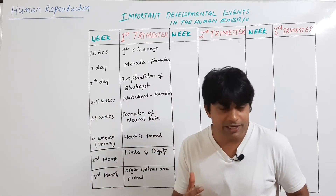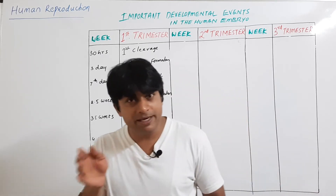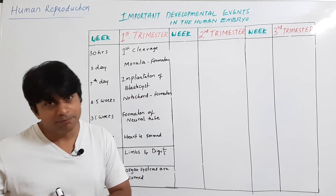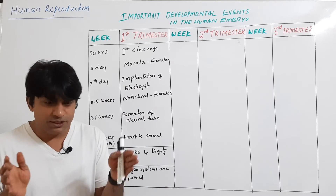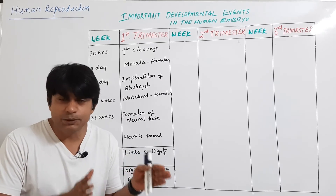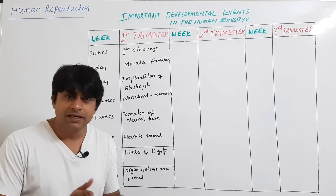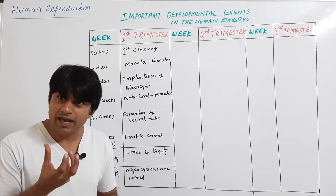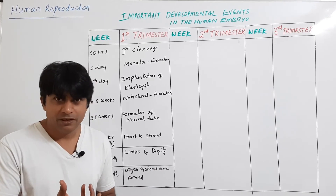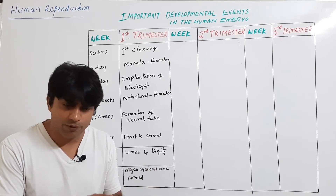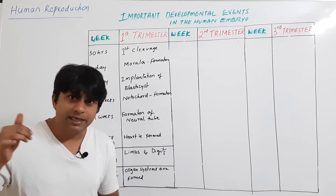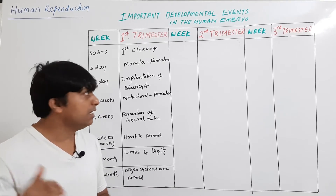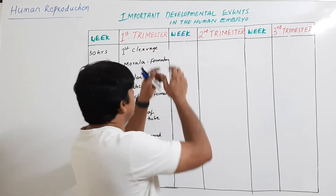During development from zygote to the ninth month, the first two months — up to eight weeks of gestation — the developing zygote is called an embryo. From the third month through the ninth month, it is called a fetus.